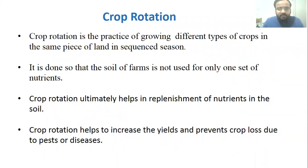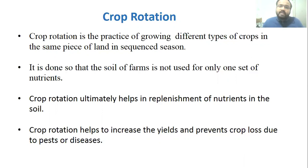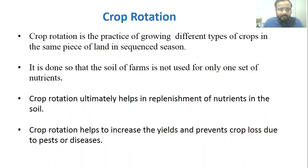We grow different types of crops on the same piece of land because if we grow only one type of crop every season, that crop will have the same type of nutrient requirement, and only those nutrients will get absorbed from the soil, causing a deficiency of those nutrients. To avoid this, we grow different types of crops in different seasons because the nutrient requirements of different crops are different, so soil is not depleted of only one set of nutrients.